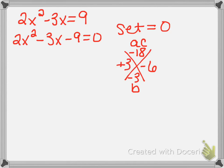Those two numbers tell us how to split up the middle term — it's not telling us the numbers that are in the factors yet. So what we have to do is rewrite our quadratic: 2x squared. We're going to take our middle term and split it up into two terms.